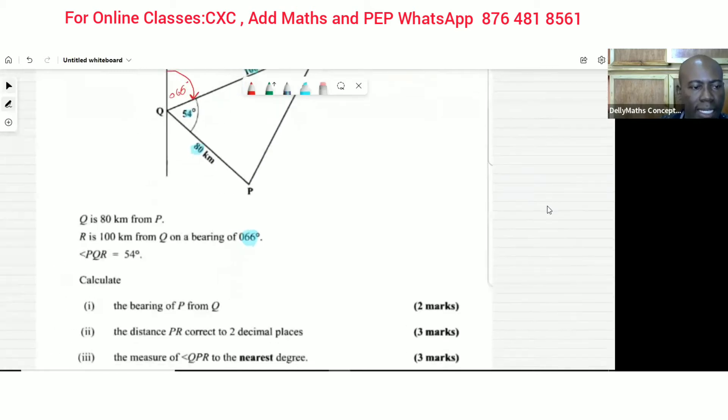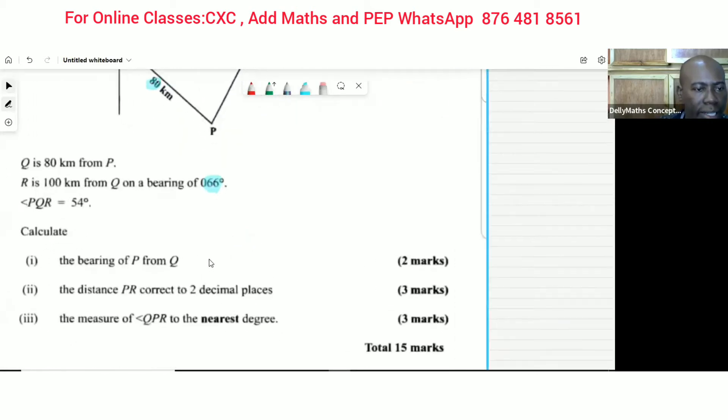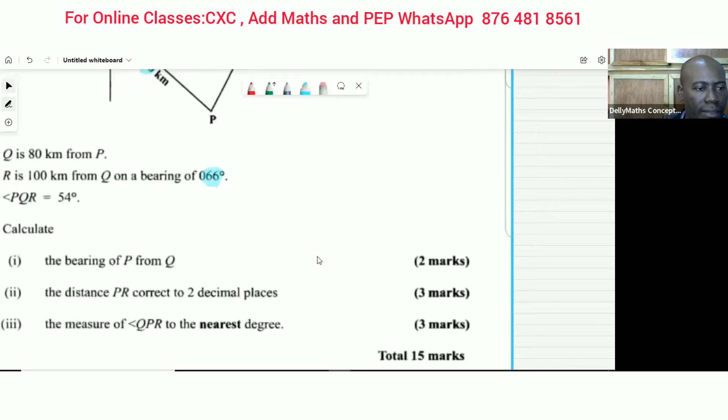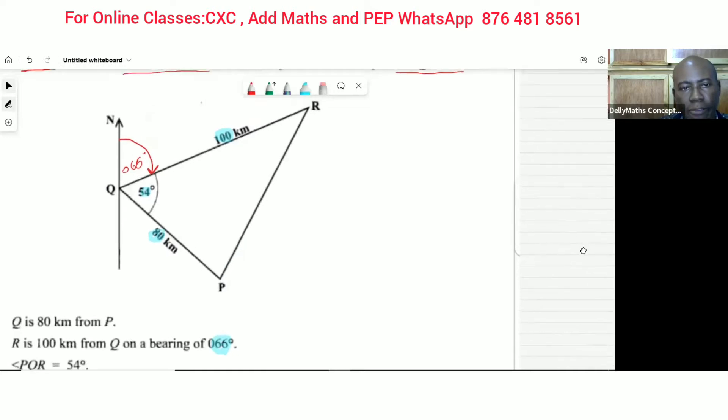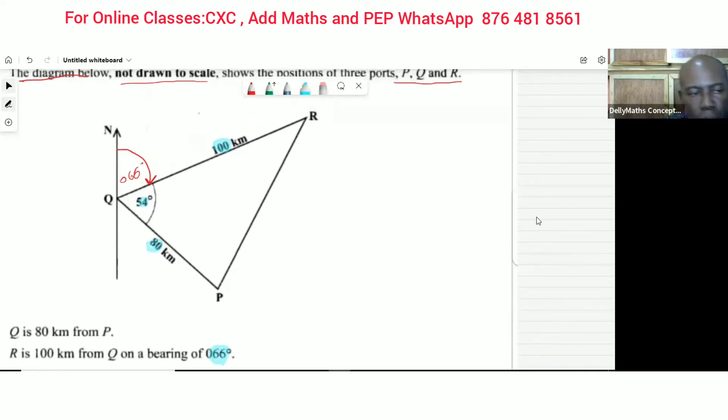The first question is: calculate the bearing of P from Q. Let's look at that - the bearing of P from Q. We're supposed to show the bearing of P from Q. That means I'm going to go to Q and set my bearings until it touches a line that leads to P. There it is. So that's the bearing of P from Q.